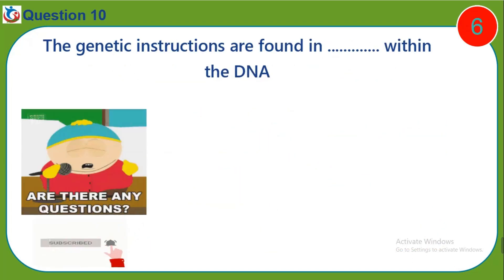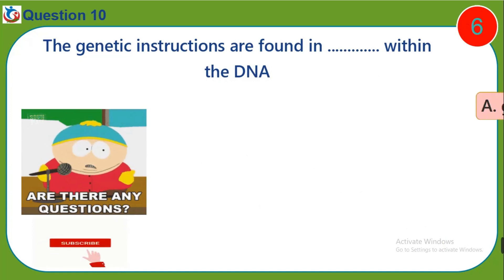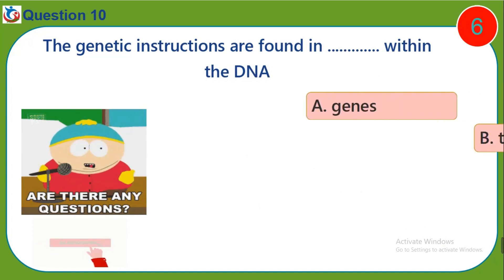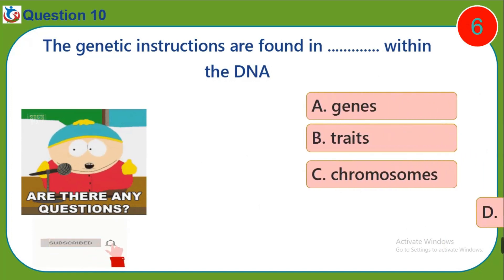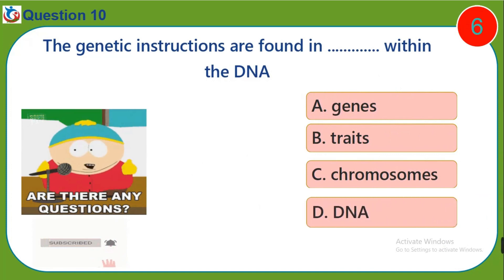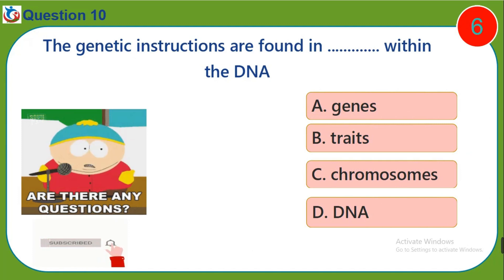Question ten: The genetic instructions are found in dash within the DNA — a) genes, b) traits, c) chromosomes, d) DNA.